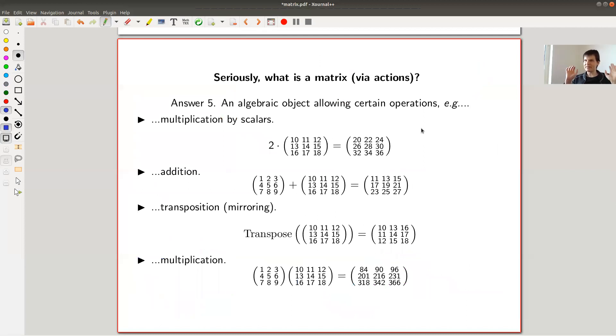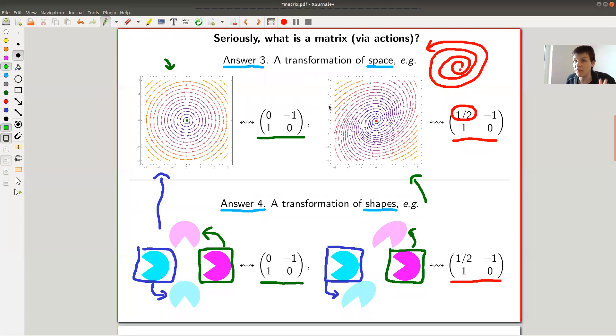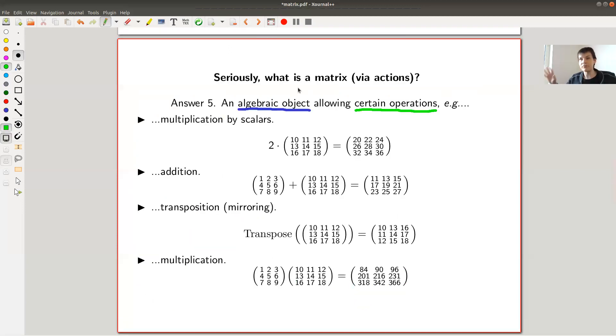And if you think of a matrix as an operation on something, then you should be able to evaluate the operation. A matrix—answer number five—is actually just an algebraic object, nothing else. Just something in the realm of algebra. And in the realm of algebra means that you allow certain operations on it, which of course are mimicked—and I will explain that in another video. They are mimicked to encode this geometric incarnation of the matrix, but you could just forget all about that. We do algebra.